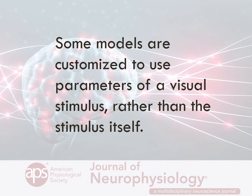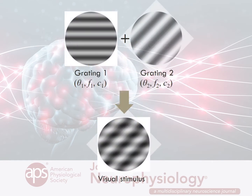For example, some customized models for cross-orientation suppression take the contrast of the two gratings used to compose a plaid rather than the plaid itself. Such a variant of a divisive normalization model can only be applied to specific visual stimuli. It cannot be generalized.